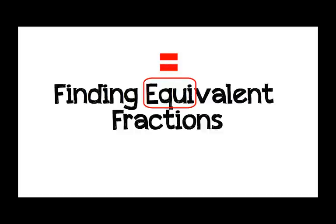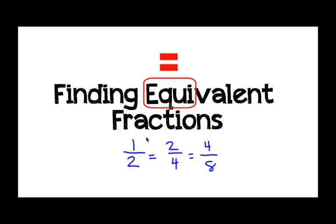For example, 1 half is equal to 2 fourths. 2 fourths is equal to 4 eighths. So 1 half is equal to 2 fourths and it's equal to 4 eighths. So we would say that these three fractions are equivalent.